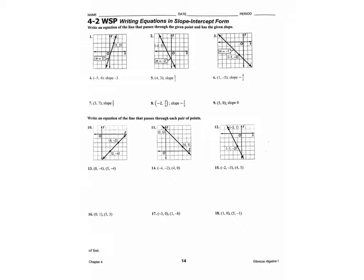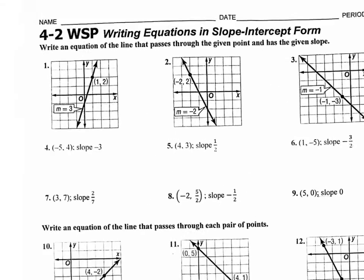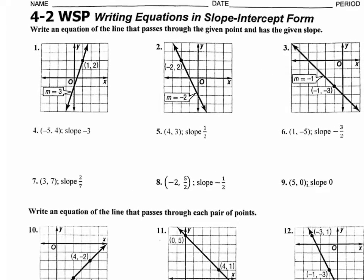So we're going to go back to section 4.2. Back then you only knew y equals mx plus b, and they want you to write an equation that passes through the given point and has the given slope. If you check the answer in the back, the answers are in y equals mx plus b form.